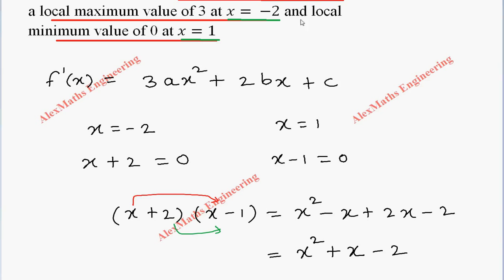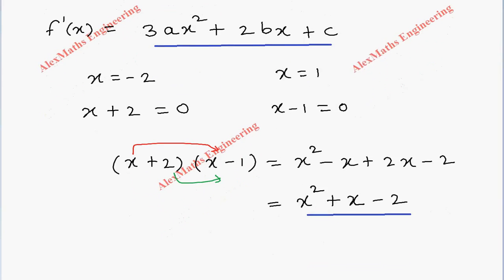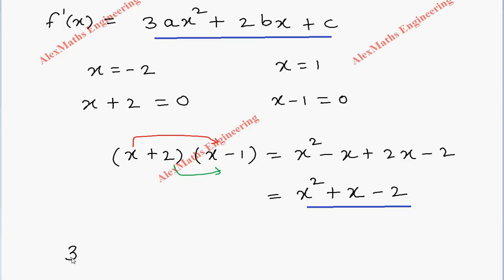So first derivative. We have to equate this first derivative to this factor which we got using the critical values. Now 3ax² plus 2bx plus c equal to x² plus x minus 2.